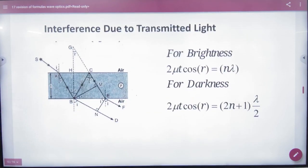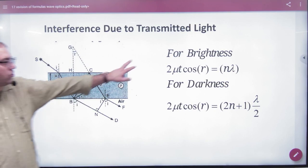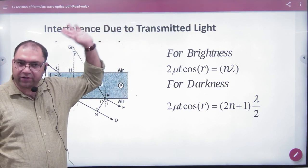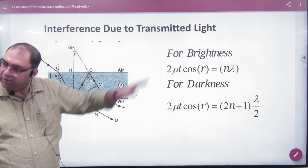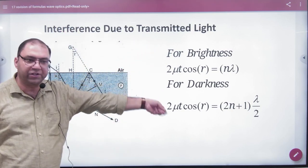Interference due to transmitted light. I will tell you how to do this formula. The brightness condition was in reflection, it will be dark and the brightness will be dark. Both formulas are interchanged.